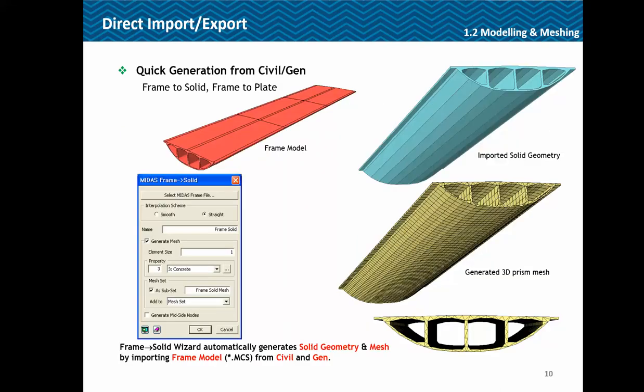Moreover, you can very quickly generate the model in Midas FEA Annex if you already have a line model in Midas Gen or Midas Civil. We have an option to export the frame model to solid or a plate, so that single line model would come as a 3D model in Midas FEA Annex and you could mesh it and directly have a look at the results.